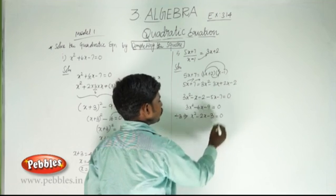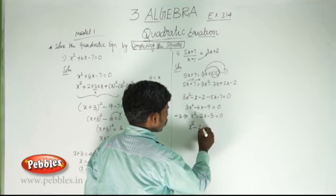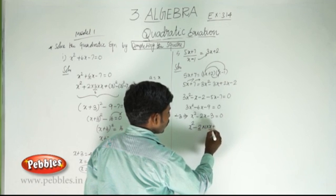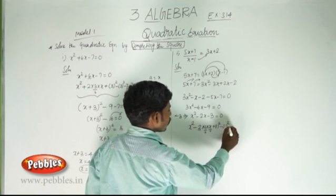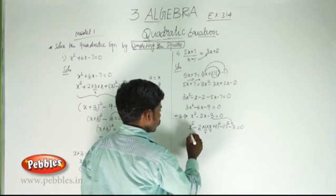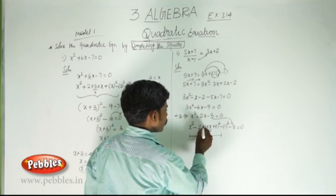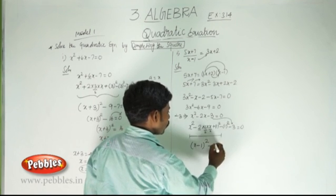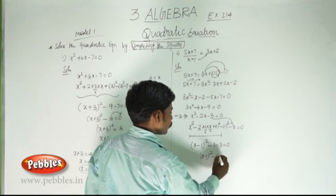Now 2x is written as 2 into 1 into x, so this is 2ab with b equal to 1. We want to add b squared and write it as (a minus b) whole squared, minus 1 minus 3 equal to 0. Then (x minus 1) whole squared minus 4 equal to 0.